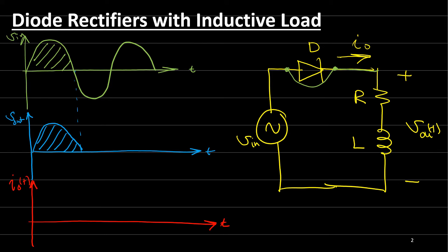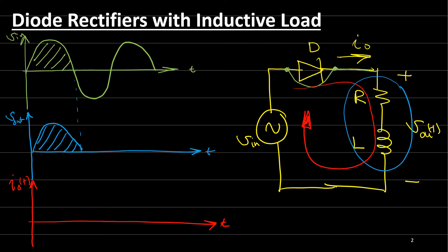Now, because the inductor holds the current, when the diode is on, the current will start flowing inside the load. But the inductor introduces a delay for the current, so it will be developing until a certain point. After that point, when the voltage is negative, the current inside the inductor will keep flowing until it reaches zero. Because it's not a resistive load, this will take time to hit the zero line.